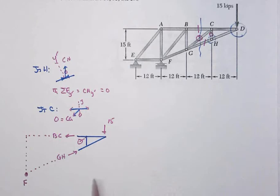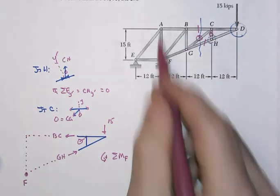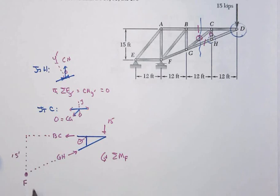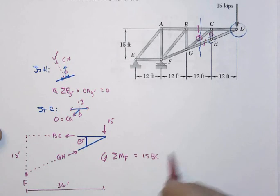And if I sum moments about point F and go in a counterclockwise fashion for positive, note that BC will have a moment arm of 15 feet. And then, the moment arm for the 15 kip load is 12 plus 12, or 36 feet. And so, we get 15 times BC minus 36 times 15 is equal to zero.